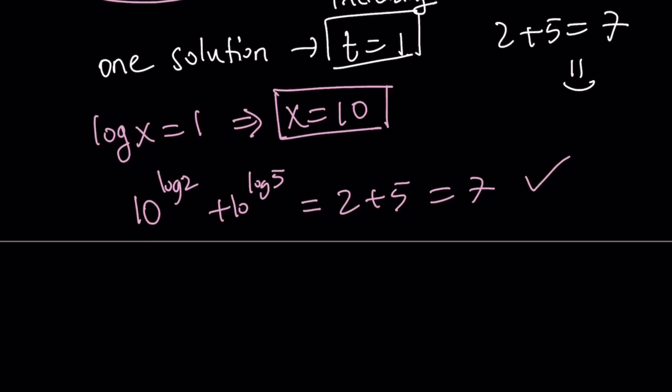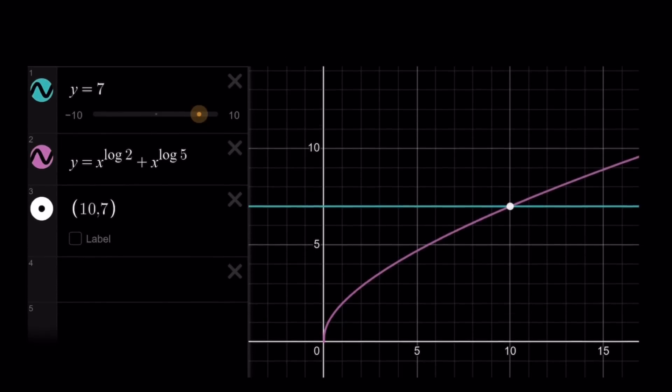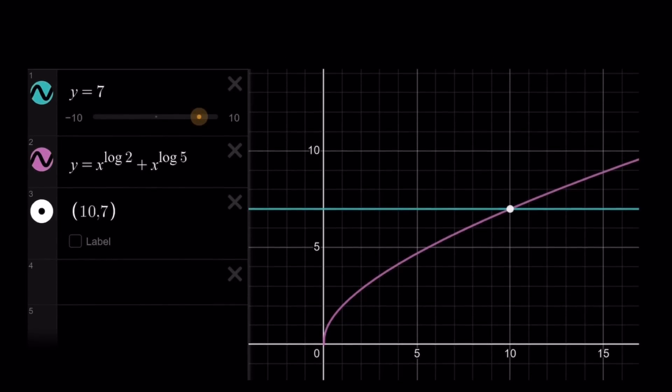Let's go ahead and take a look at the graph and see how this plays out. So x equals 10 is the answer. And here's our graph, our graph of the function x to the log 2 plus x to the log 5. So what does that look like? First of all, when you look at a graph like this, it kind of looks like the radical.